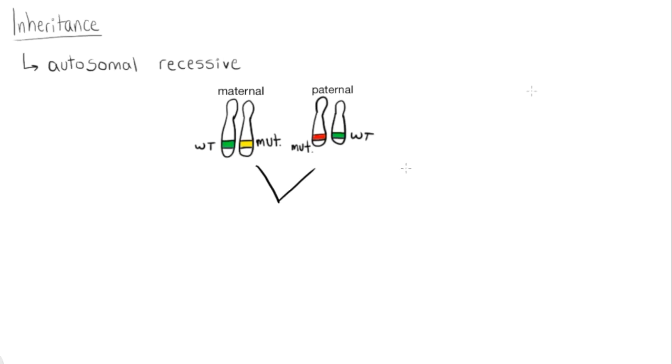Inheritance of Strömme syndrome. Strömme syndrome is an autosomal recessive disorder, meaning that both copies of the CENPF gene must be mutated in order to cause the disease.